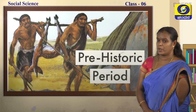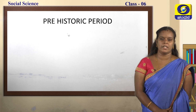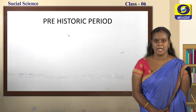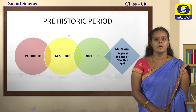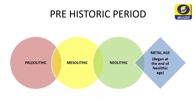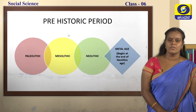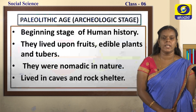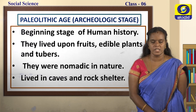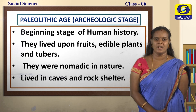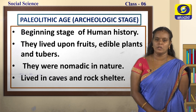Now let us move on to the prehistoric period. Prehistoric period is divided into three main parts: Paleolithic, Mesolithic, and Neolithic age. One more age is the Metal age, which comes under the Neolithic age itself — it began at the end of the Neolithic age. Let us study about the Paleolithic age first. Paleo means old and lithic means stone, so the old stone age is also called the Paleolithic age.